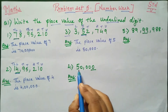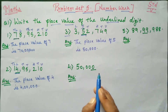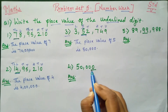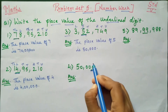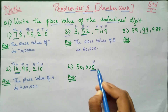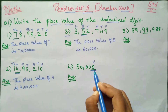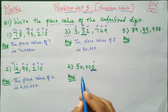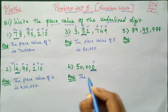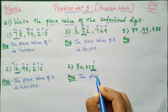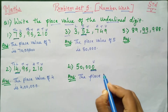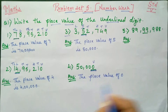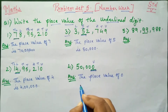Fourth one: 50,000. This is very easy — they have underlined the unit place, and the unit place has the number 0. So the answer will be 0. Therefore, the place value of 0 at any place is 0.